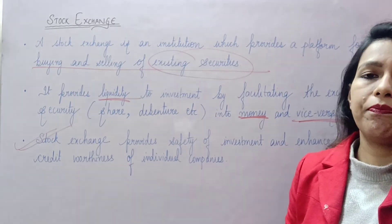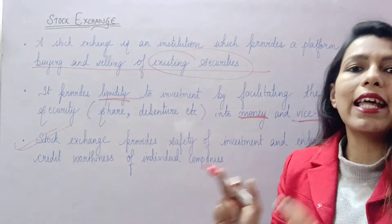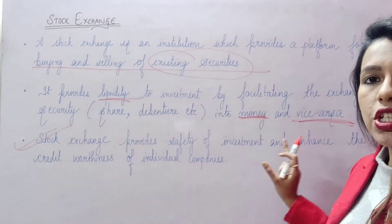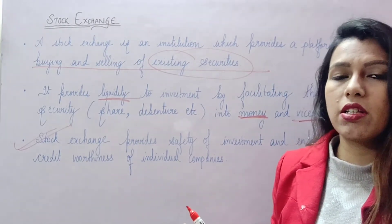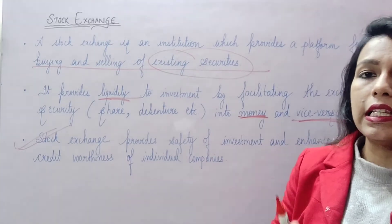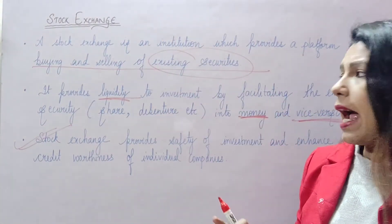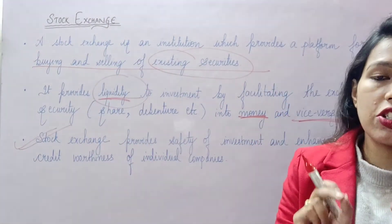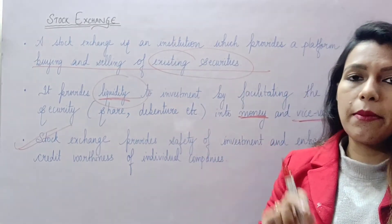From the flowchart, we learn that when a company sells new shares, that is the primary market, and when the public sells those shares, that is the secondary market — the stock exchange. In this market, we get a lot of liquidity. We can easily convert shares, debentures, or any security easily into money.